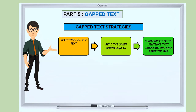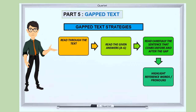The third strategy — this is the most important strategy. You need to read carefully the sentence that comes before and after the gap. What do we highlight? We highlight reference words or pronouns.